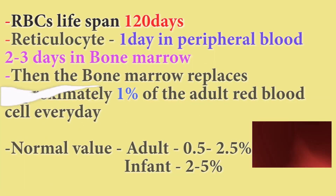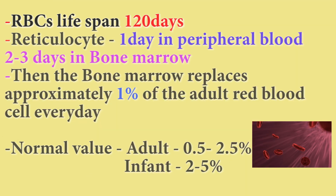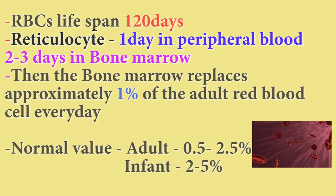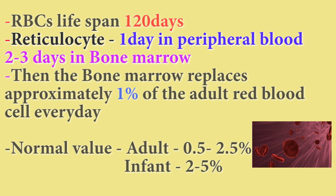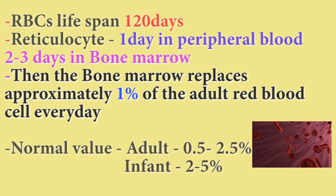RBC life span is 120 days. Reticulocyte spends 1 day in peripheral blood and 2-3 days in bone marrow. The bone marrow replaces approximately 1% of the adult red blood cell every day.